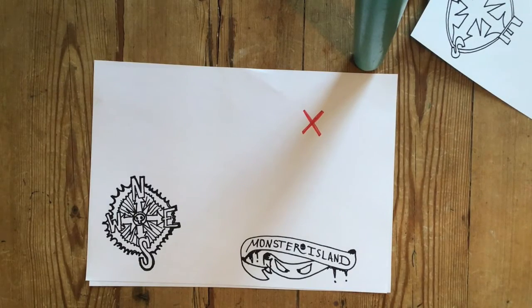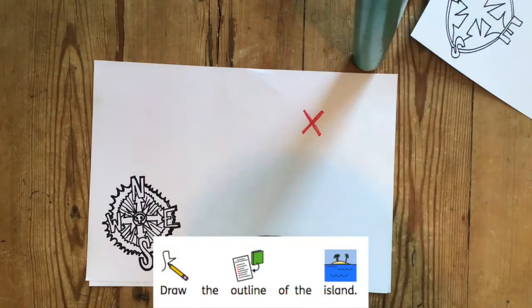The next step is to draw the outline of the island, or the place, on your map.